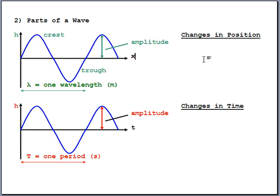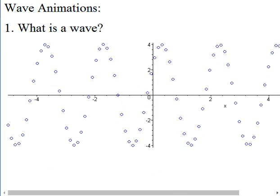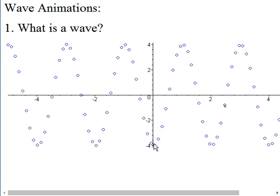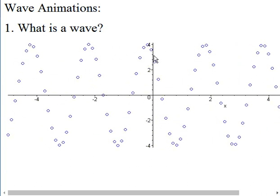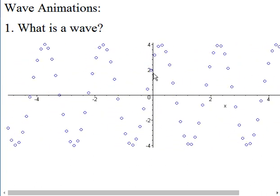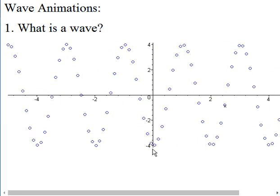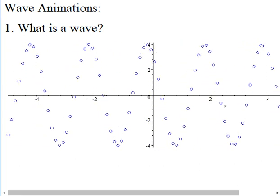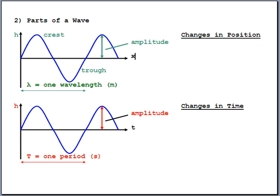What about changes in time? If we pick one spot in space and watch that ping-pong ball going up and down, graphing its location with time on the bottom axis, we can still talk about amplitude. If we measure how much time it takes for one full repetition, that's the period — we use capital T for period, representing how much time it takes for exactly one cycle.